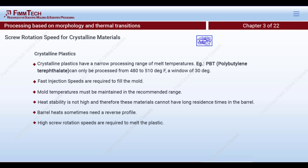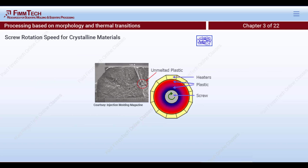Screw rotation speeds for crystalline materials need to be on the higher side. Heat for melting plastic comes from two sources: the heater bands around the barrel, and the rotating screw itself. Plastic is a poor conductor of heat, so the screw provides shear heat — frictional heat generated as the screw turns and rubs against the plastic. Crystallites need a lot of energy to melt, so screw speeds must be fast enough. Unmelted particles in a part can cause it to fail; increasing screw rotation speeds resolved this problem.